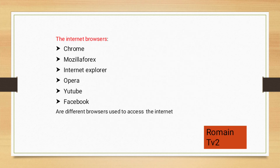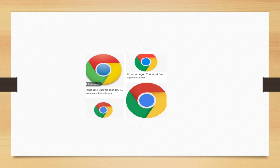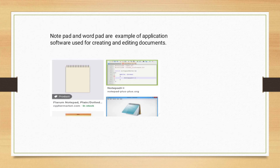Internet browsers help us to access the internet. Examples include Chrome, Mozilla, Internet Explorer, Opera, YouTube, and Facebook. Notepad and WordPad are examples of application software used to create or edit documents.